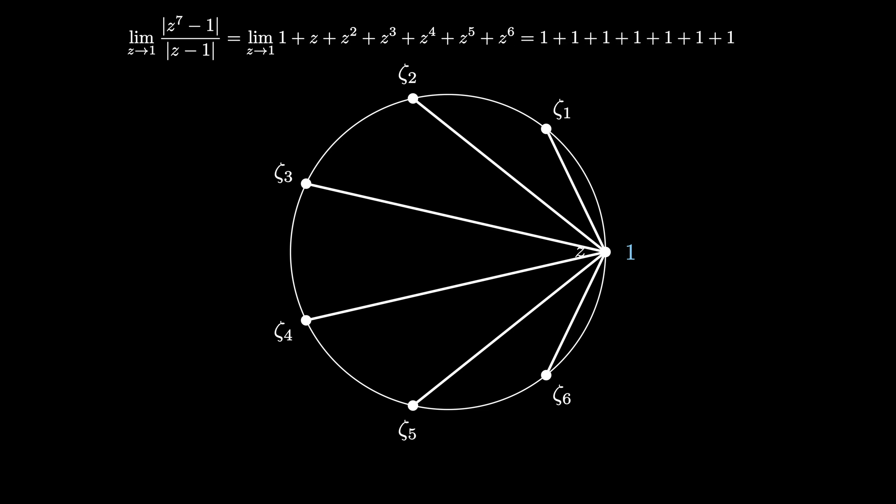But this is continuous at z equals 1, so we can plug in 1 for each value of z, resulting in the sum of 7 ones, showing us the product of interest is 7.